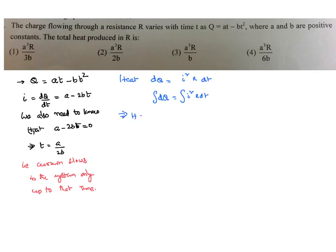That implies heat generated is integral of i squared, but we have already proved i as a minus 2b times t. So it's integral of (a minus 2bt) whole squared times r dt. We can simplify this: integral of a squared plus 4b squared t squared minus 2 times a times 2b times t, just expanding a minus b whole square, times r dt.